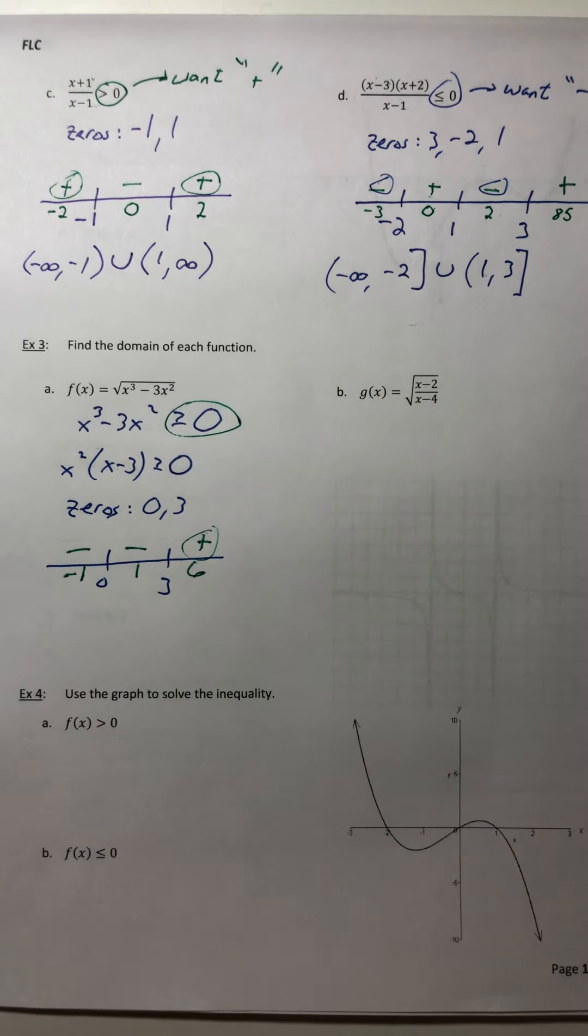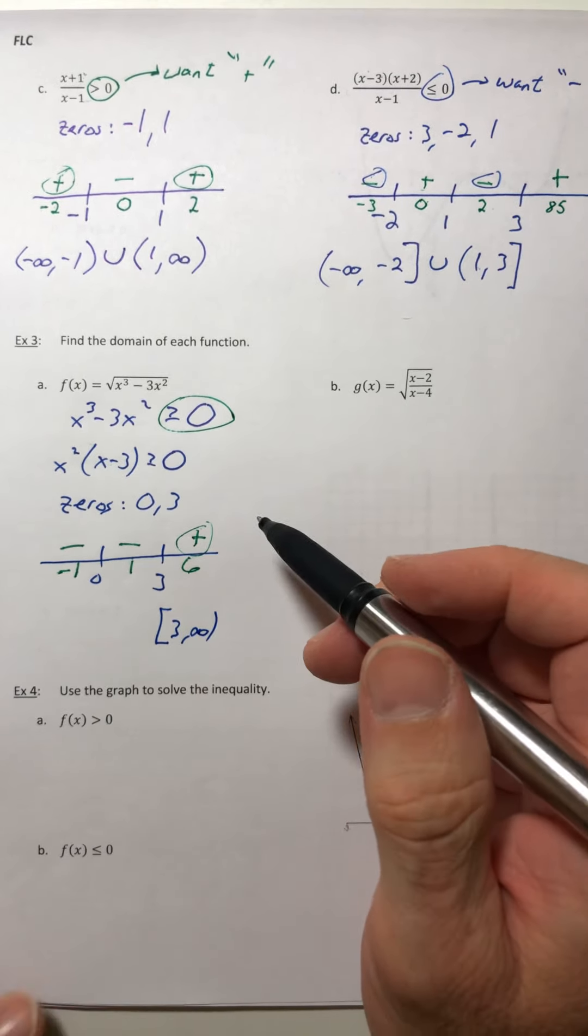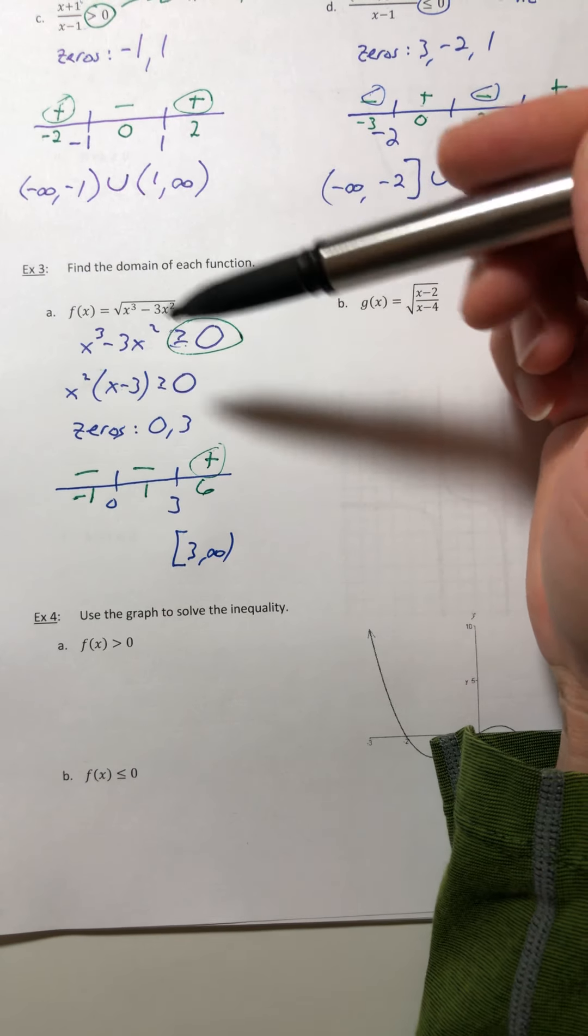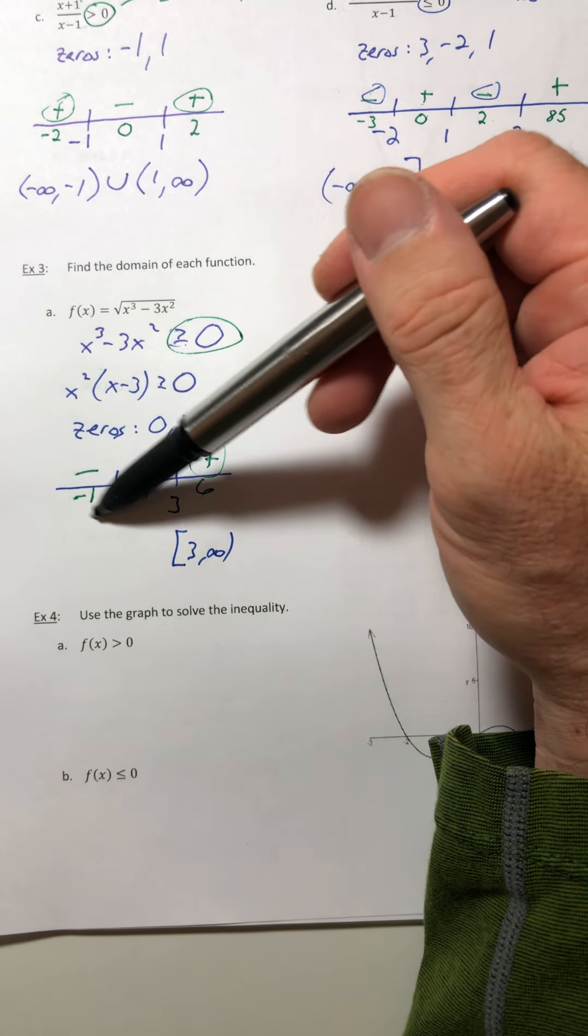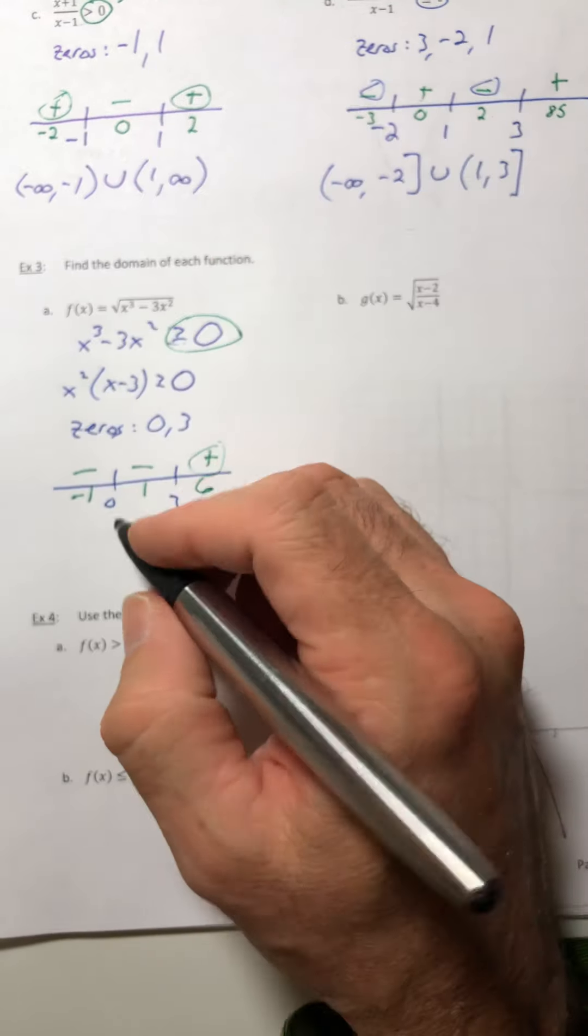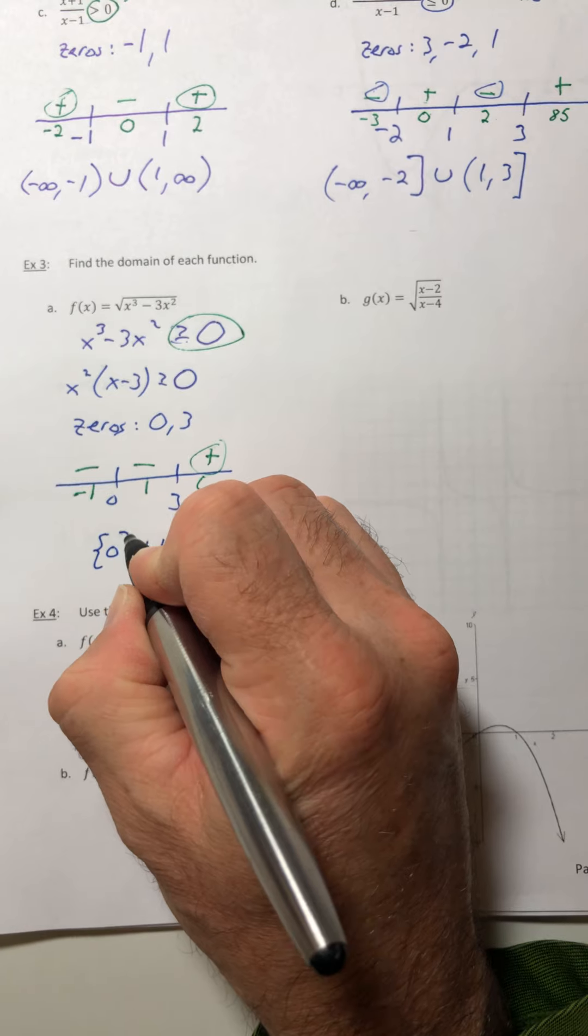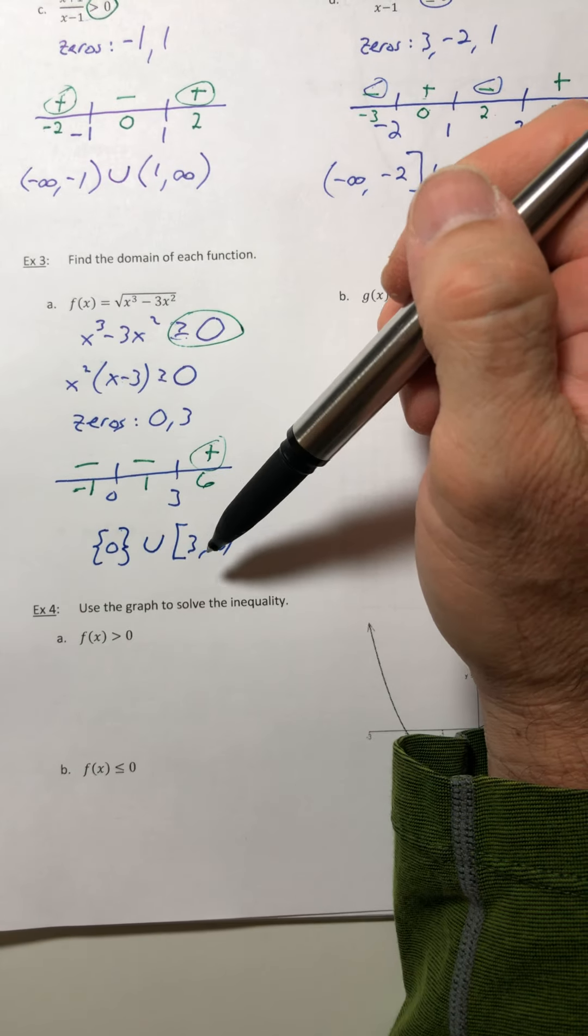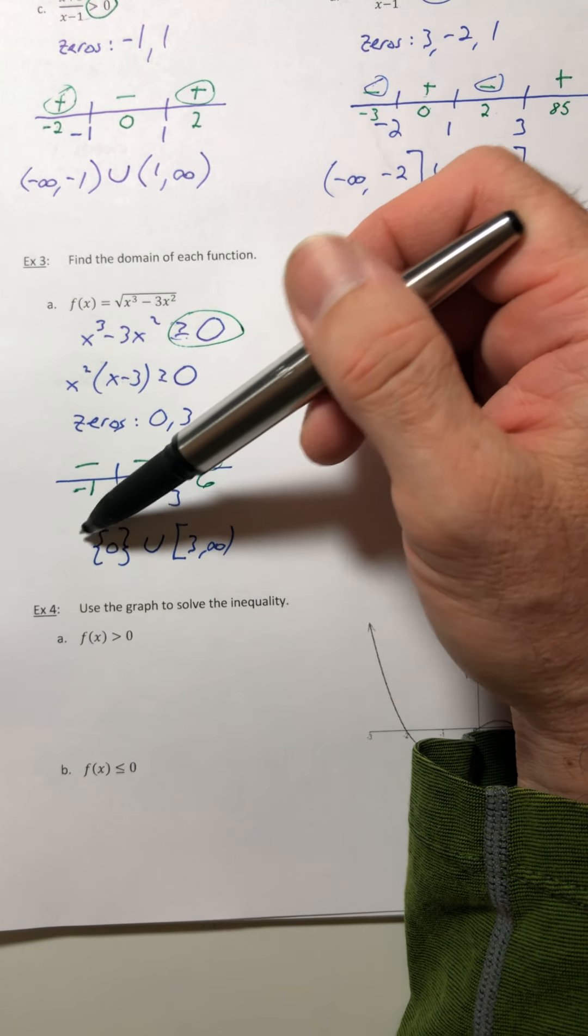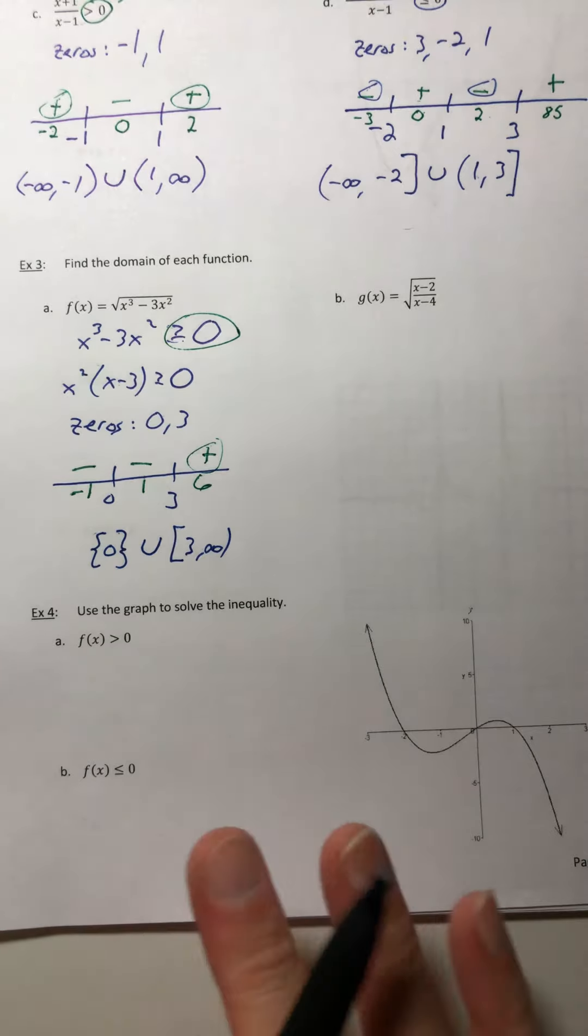So that would be 3 to infinity. But this is where it can be a little tricky because you want it greater than or equal to zero. So there's a number on this side that makes it equal to zero and that was zero itself. So we have to include that one solution of zero. It's not an interval, it's just a single number off on its own. So for single numbers, if you have a situation like this, just surround it with the curly brackets, it's set builder notation. So just be careful.